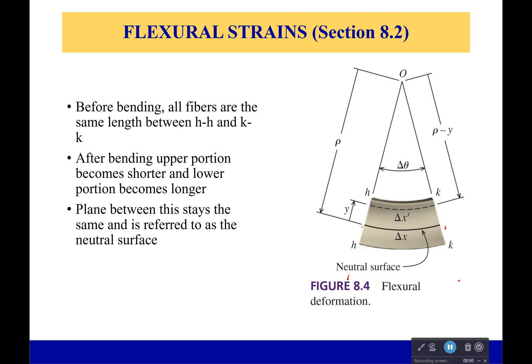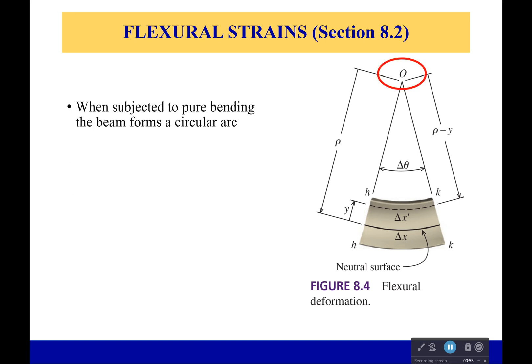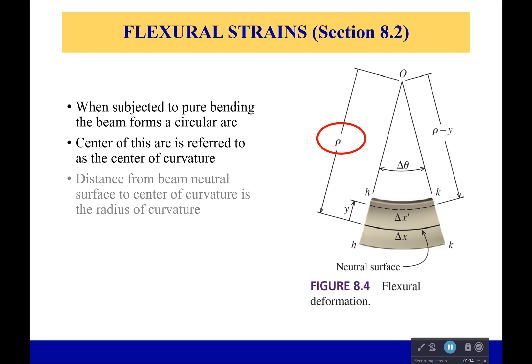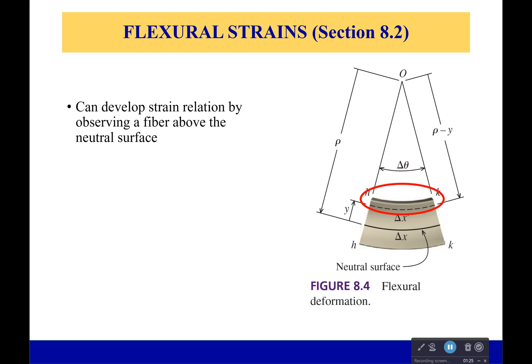When subjected to pure bending, the beam forms a beautiful circular arc, and there's going to be some center on that arc which is referred to as the center of curvature, which is helpful for a lot of our equations. If you look at this value right here, we can also use this radius to tell how much everything has bent—what is the length of these different sides compared to how it was originally.